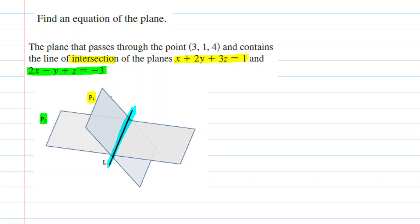What we're going to do is try to figure out a vector that is running parallel to that line. We're going to end up calling that vector A. And to find vector A, what we do is we take the cross product of each plane's normal vector.